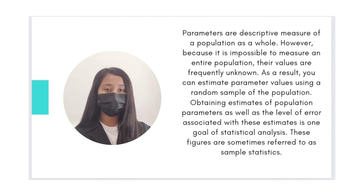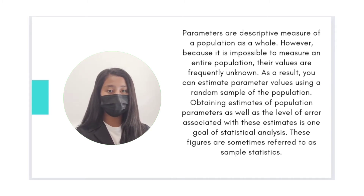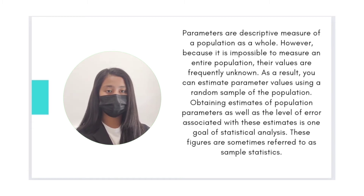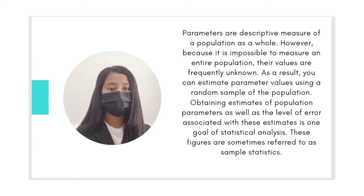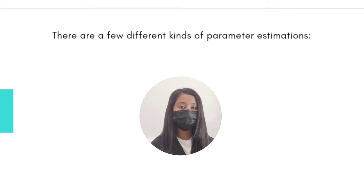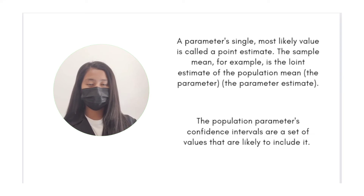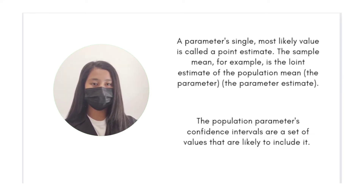Parameters are descriptive measures of a population as a whole. However, because it is impossible to measure an entire population, their values are frequently unknown. As a result, you can estimate parameter values using a random sample of the population. Obtaining estimates of population parameters, as well as the level of error associated with these estimates, is one goal of statistical analysis. These figures are sometimes referred to as sample statistics. There are a few different kinds of parameter estimations.